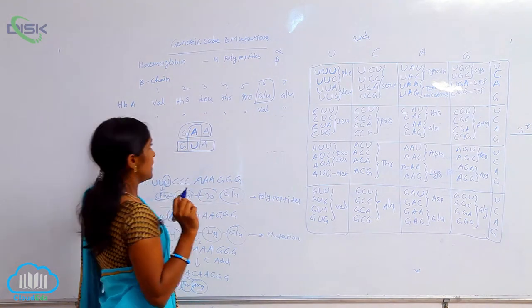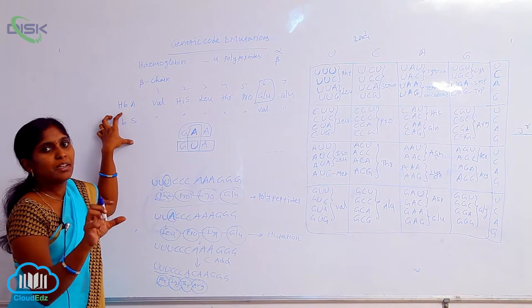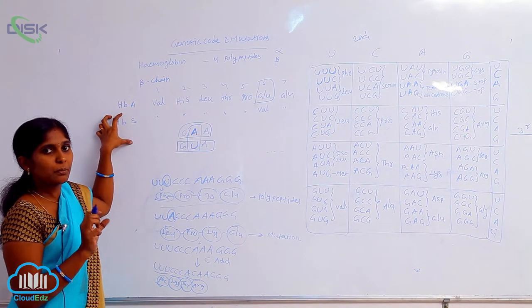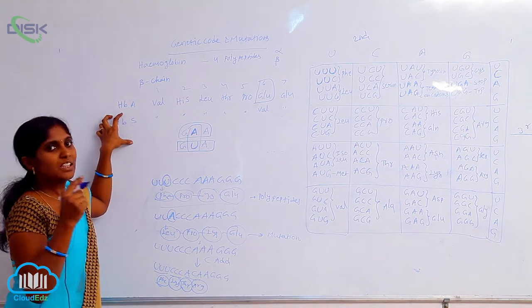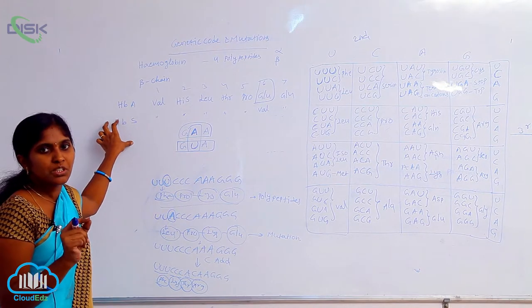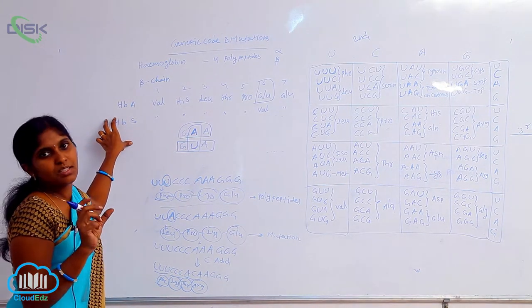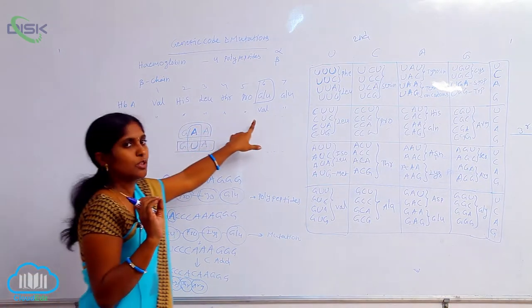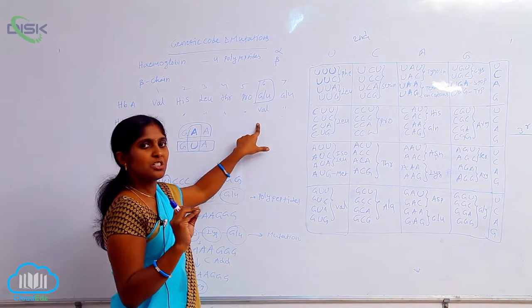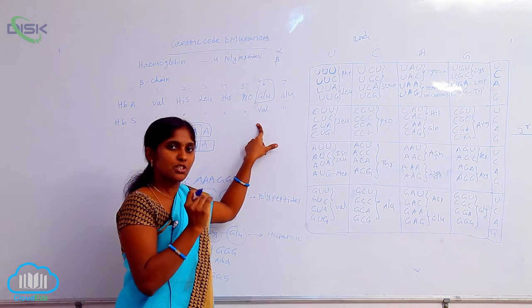It means the polypeptide chain is changed. That leads to the phenotypic expression instead of the normal one. The RBC cells are generally rounded shape, but here because of the valine representation, they are changed into sickle shape.